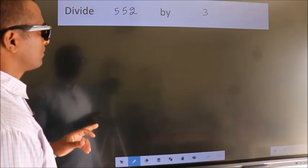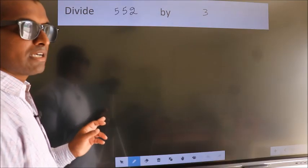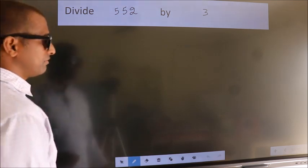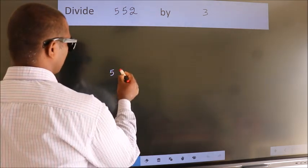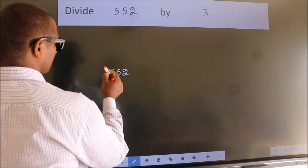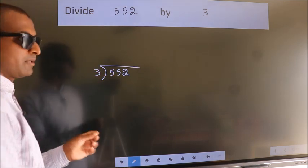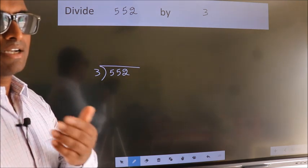Divide 552 by 3. To do this division, we should frame it in this way. 552 here, 3 here. This is your step 1.